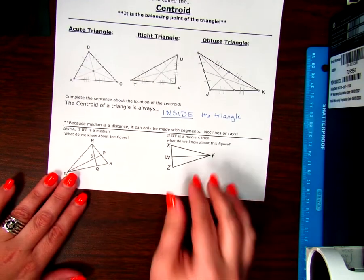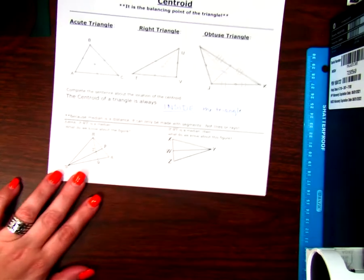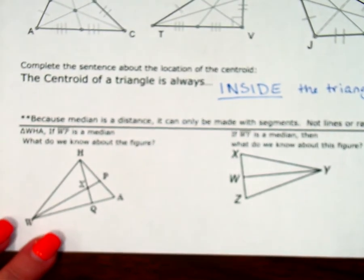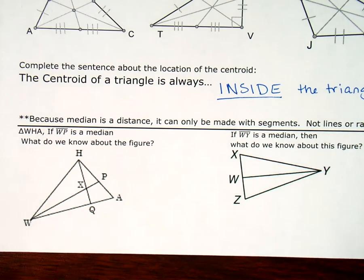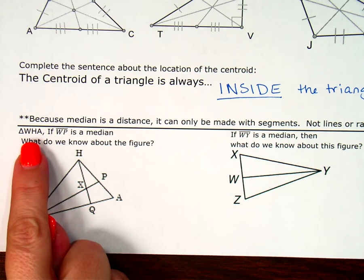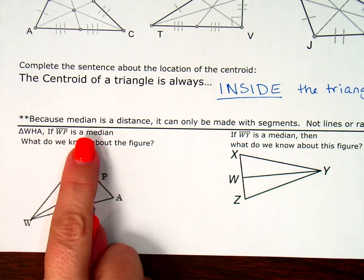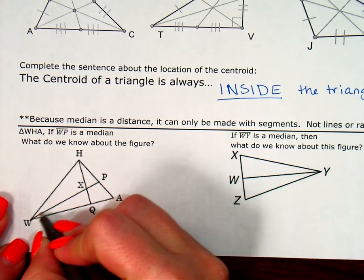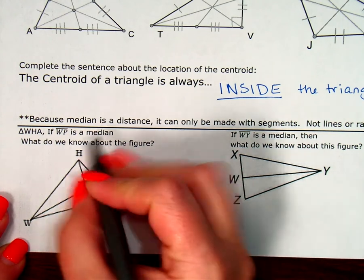So, if you have Ms. Bishop for your teacher, and you come to sync time for this week's lesson, she'll show you that piece of wood and show you how you can balance it on your fingers. It's really kind of neat. So, let's look at what we know when we're told we have a median. I have two figures here where we have medians. I have triangle WHA, and it says if WP is a median, what do we know about the figure? If WP is a median, we know it starts at a vertex, and we know it goes to a midpoint.